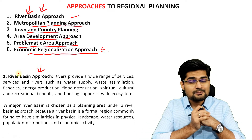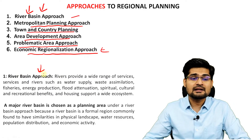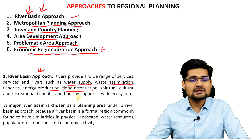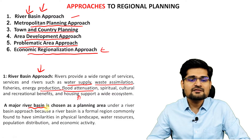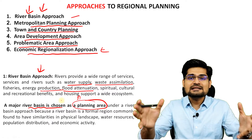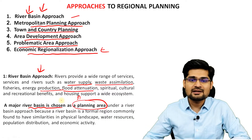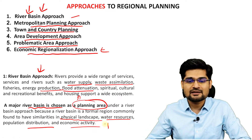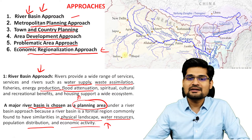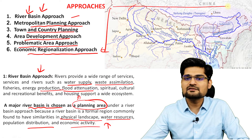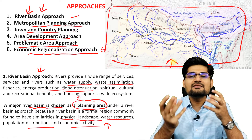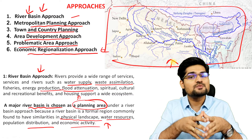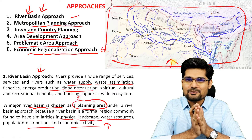The river basin approach is important because rivers are the lifeline — providing water supply, waste assimilation, energy production, and food. A major river basin is chosen as the planning area, a formal regional plan is created, and all watershed areas are taken up for development. Planners study the physical landscape, water resources, population distribution, and economic activity. For example, India can be divided into sub-regions on the basis of particular rivers and their tributaries or drainage basins.